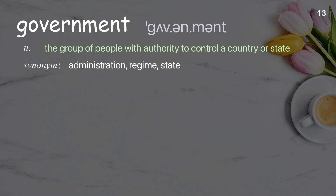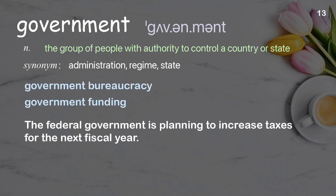Government. The group of people with authority to control a country or state. Examples: government bureaucracy, government funding. The federal government is planning to increase taxes for the next fiscal year.